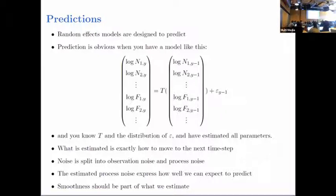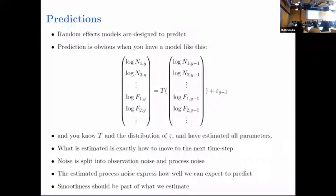Prediction from a state-space model is straightforward: the model relates log N's and log F's in this year to the previous year through functions for stock-recruitment, the survival equation, and a process for F, plus process noise. After estimating parameters, going from one year to the next is just following the formula. The process noise estimated tells you how precise you can expect your prediction to be. Smoothness should be part of what we estimate, not left to model choice or external input.